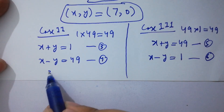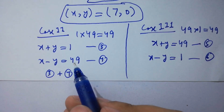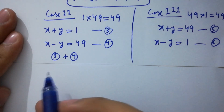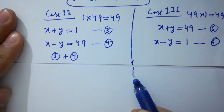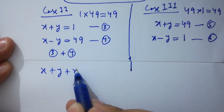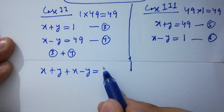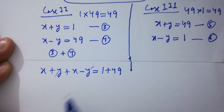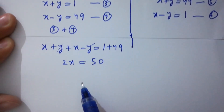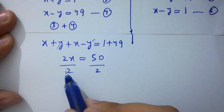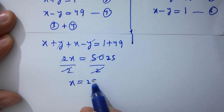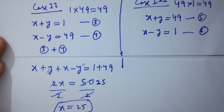Like before, adding the third and fourth equations: x plus y plus x minus y equals 1 plus 49. The y terms cancel, giving 2x equal to 50. Dividing by 2 on both sides, we get x equal to 25.